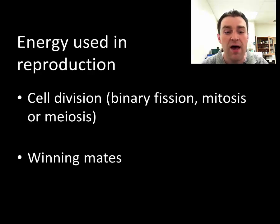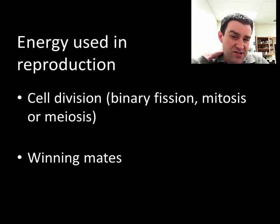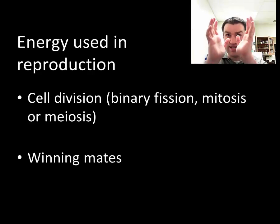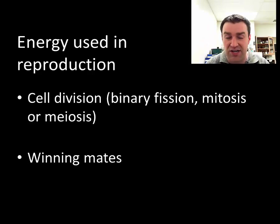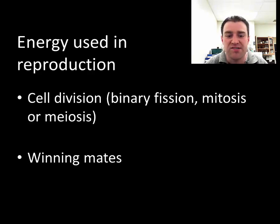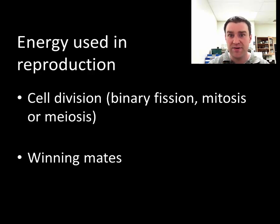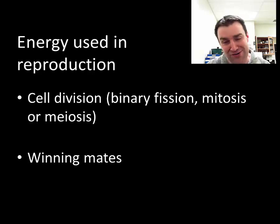Reproduction involves other types of cell division. All cell divisions require making new DNA, lining it up, and splitting it evenly, which all takes energy. For sexual reproduction in a population, there may be competition among members, courtship displays, or competitions between males that involve significant energy expenditure.